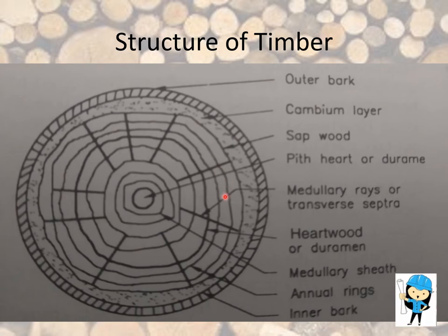Next we are going to see about the medullary rays. These are radial fibers connecting the cambium layer and the pith of the tree. The function of the medullary rays is to store the food of the tree and distribute it to the different parts according to necessity.